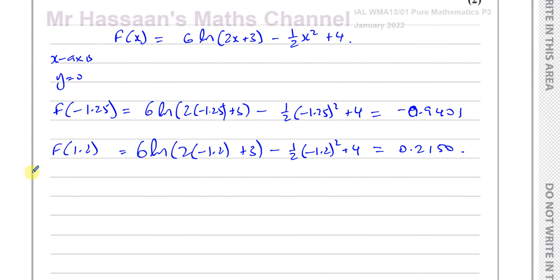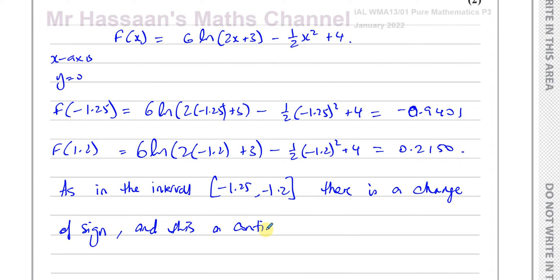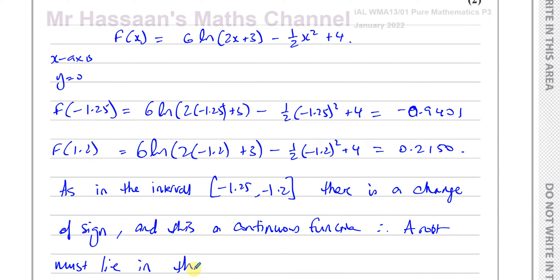We should write down a statement: in the interval minus 1.25 to minus 1.2, there is a change of sign. They're looking for this phrase — change of sign. You can also mention that this is a continuous function with no asymptote, and therefore a root must lie in this interval.